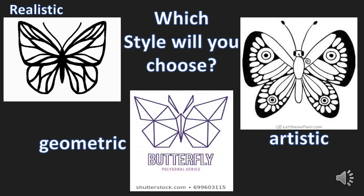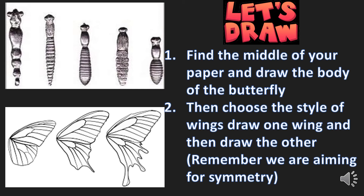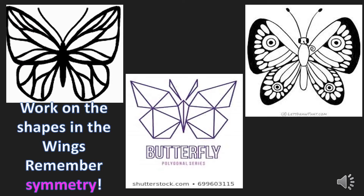So you get to choose — have fun. Find the middle of your paper and draw the body of the butterfly: the head, the thorax, the abdomen. There are a couple of examples at the top showing different body styles. Then choose a style of wings. You're going to draw one wing and then the other one. Remember, we're aiming for symmetry — take your time with this step because you want the right wing to look as close to the left wing as possible.